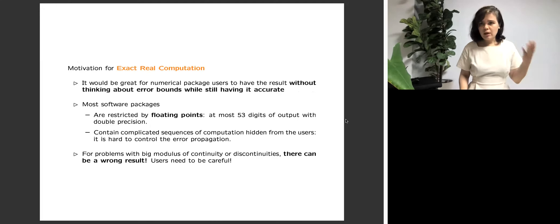At the same time, the currently existing software packages which are very highly developed are still restricted at least by floating points which can give at most 53 digits of output even with double precision, which is really good but sometimes might be not enough. Also many programs contain complicated sequences of computation which are hidden from the user and sometimes it is hard to say how these floating errors accumulate throughout the sequence of computation. And for problems with big modulus of continuity or even discontinuous, there can be just wrong results, which means if the inputs are very close, the outputs can be very different and floating points are not enough to capture this and we can run into errors.